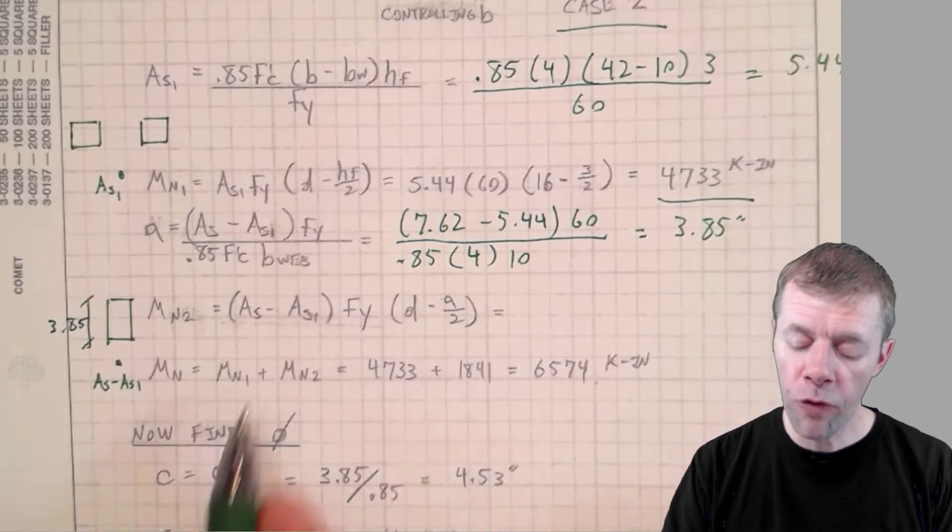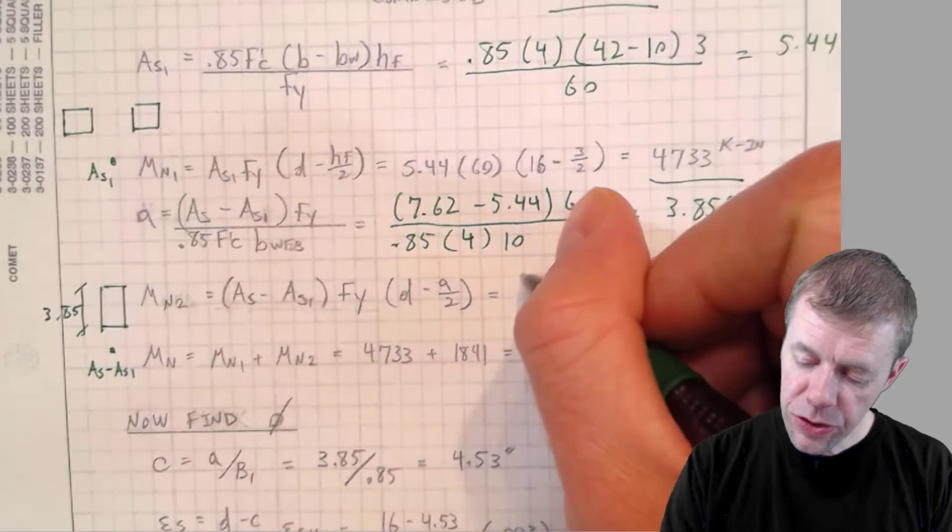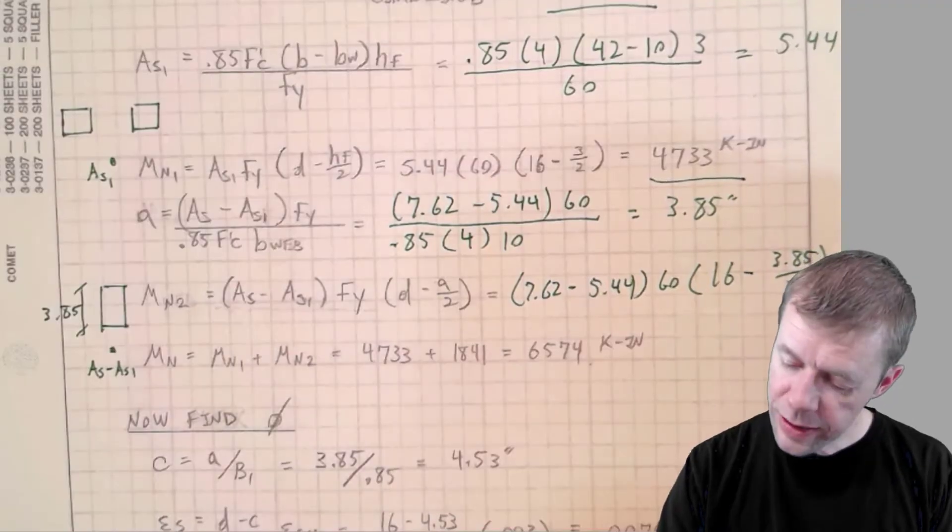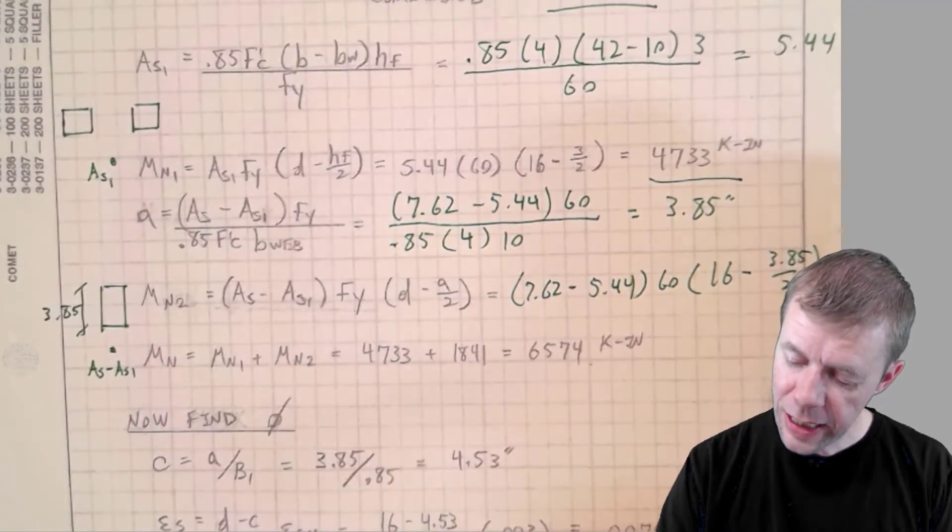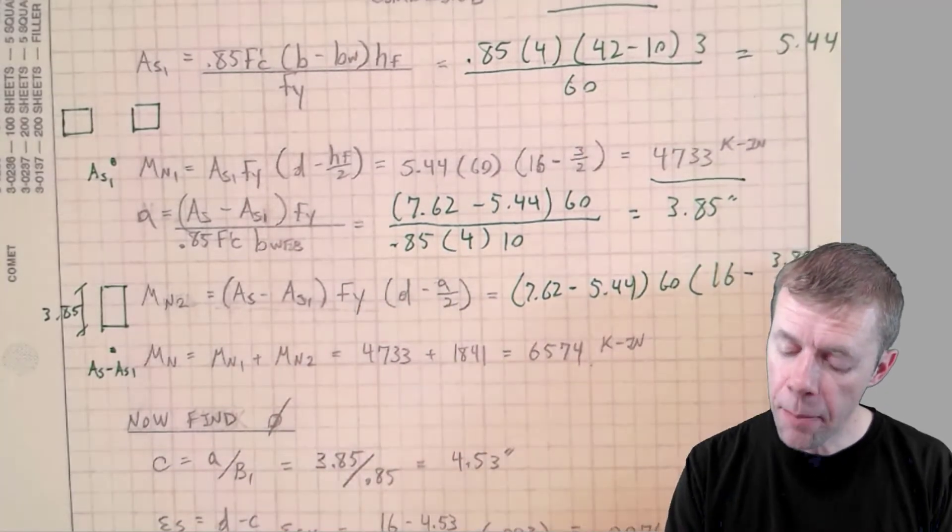Now I solve for my moment. So I take 7.62 and all of that is equal to 1841. So I get to take that moment.